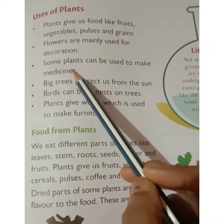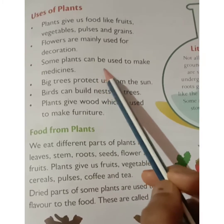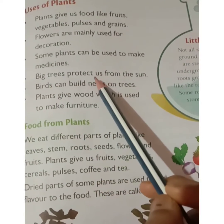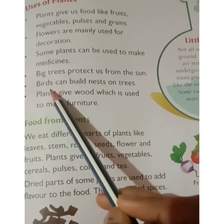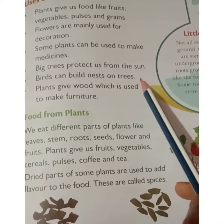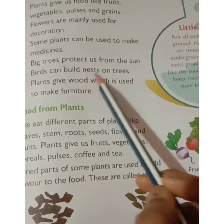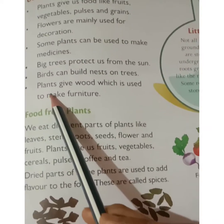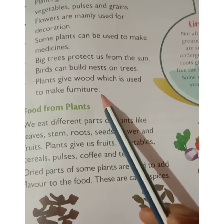Some plants can be used to make medicine. Big trees protect us from the heavy sunlight. Plants and trees also help birds to build their nests. Plants also give us wood, which is used to make furniture — for example, chairs, tables, desks, and so on.